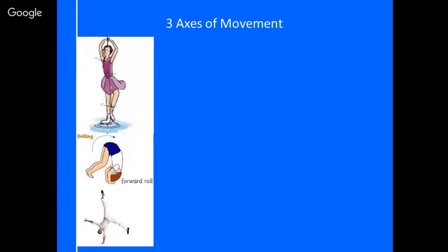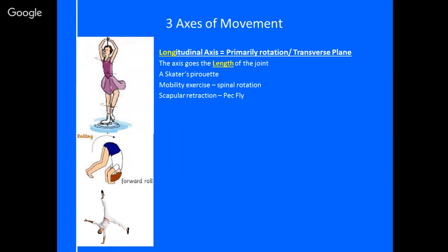The three different axes of movement: the first one is the longitudinal axis. Think about the length of the joint. Imagine a ballerina in a jewelry box or a figure skater doing a pirouette. A good example is that they've got a stick or a skewer going the whole way down through their spine, and then you're twisting them, which makes it move in the transverse plane.